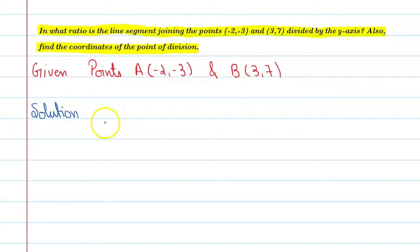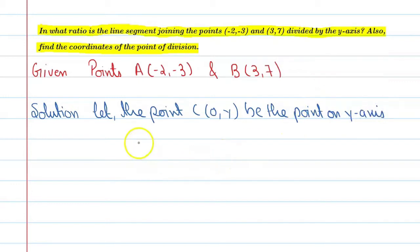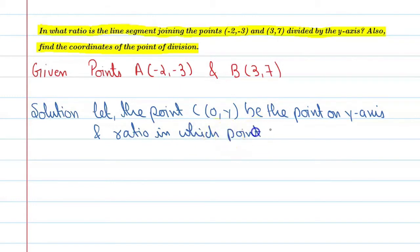First of all, let the point C that is zero comma y be the point on the y-axis. And the ratio in which point C divides AB is k ratio one.